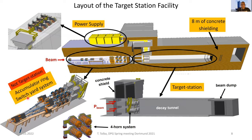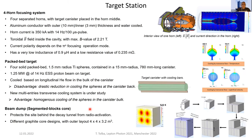The target station facility is built from the power supply unit and the target station. Shown here is the four-horn system used to focus the produced secondary hadronic beam in the forward direction, and to decay the pions to produce the muon neutrinos going to the far and near detectors. The project proposes a four-horn system composed of four separated horns with target canisters placed in the middle.